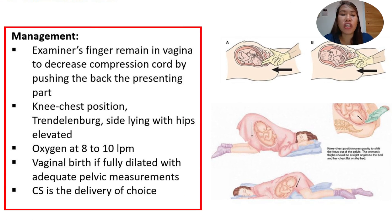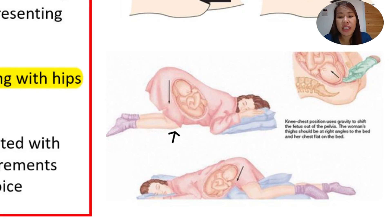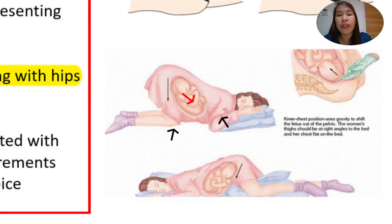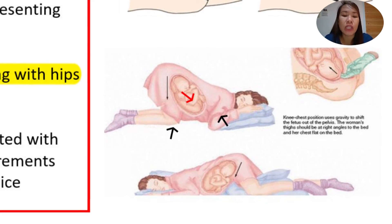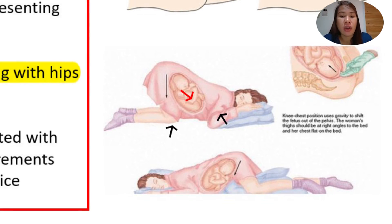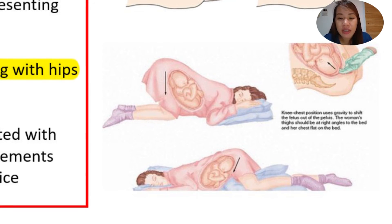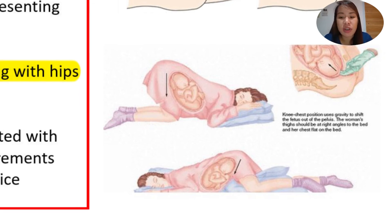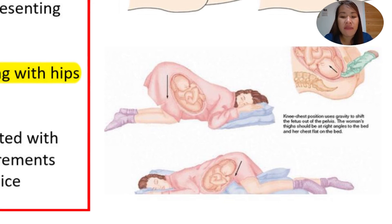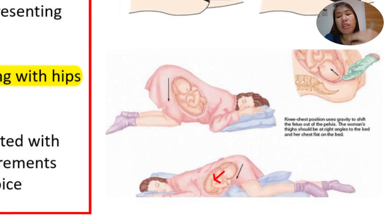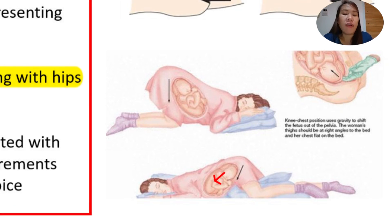Another management strategy is the knee-chest position. In this position, the hips are elevated, and gravity will pull the baby to the other side, therefore decreasing compression on the umbilical cord. Another option is side-lying with the hips elevated. The mother lies on her side with hips elevated — similar to knee-chest — and the weight of the baby, due to gravity, shifts to the other side, thereby relieving compression on the cord.